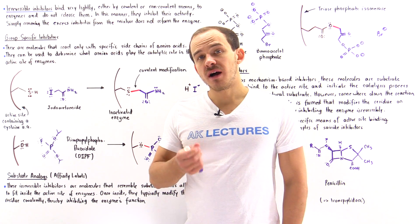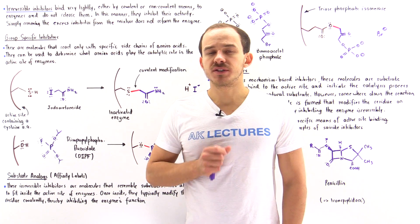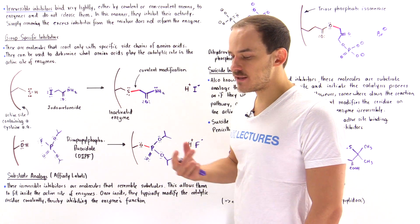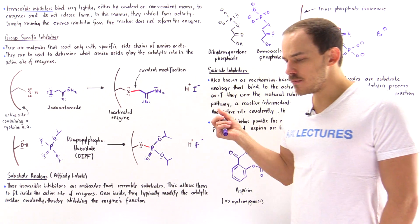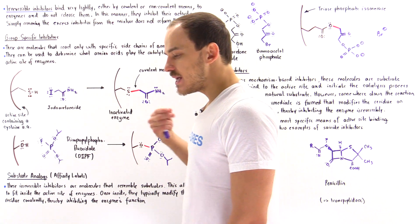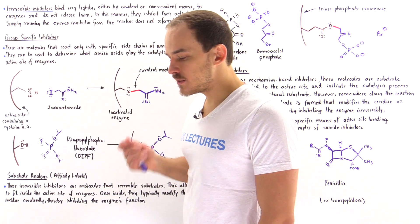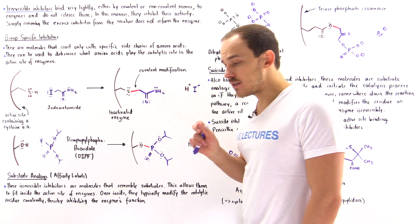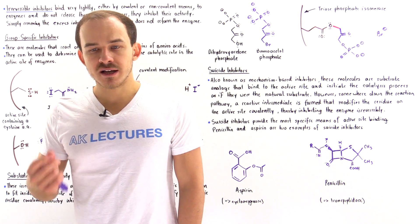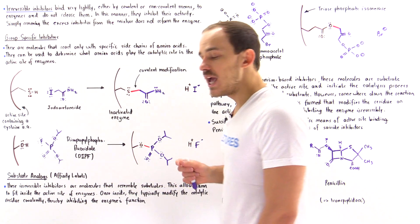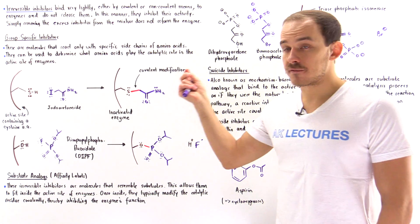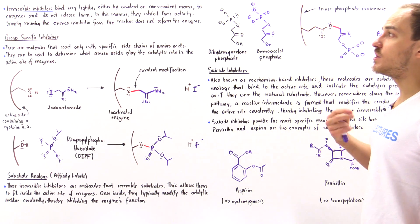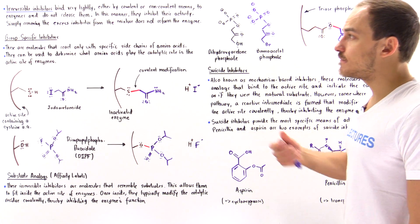Irreversible inhibitors are molecules that bind onto active sites of enzymes and inhibit that enzyme's activity. These irreversible inhibitors can bind onto the active site either by covalent or non-covalent means, but once they bind onto that active site, they will not let go — they bind very, very tightly. And even if we remove excess inhibitor from the mixture, that will not dissociate the inhibitor or reform the active version of the enzyme.